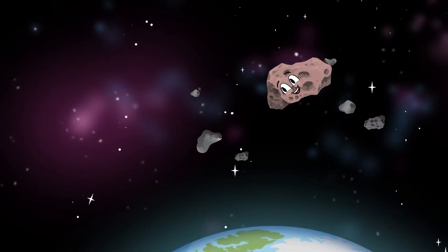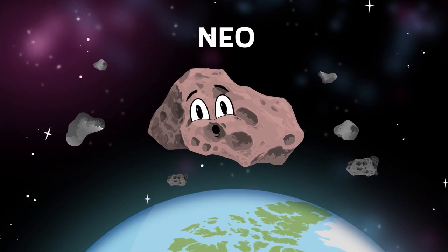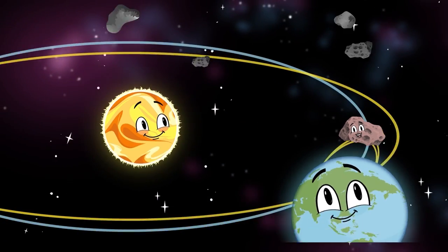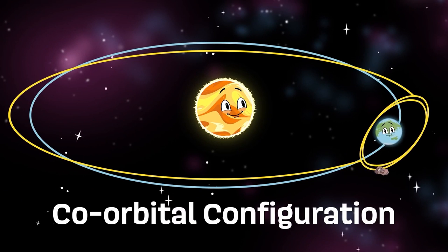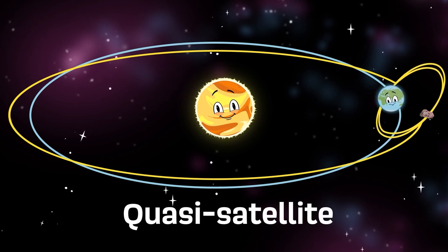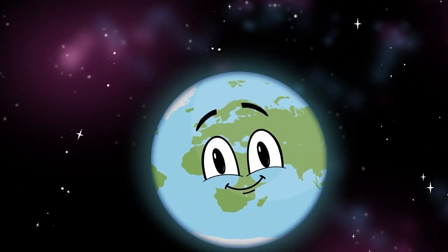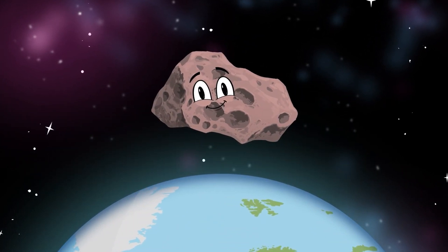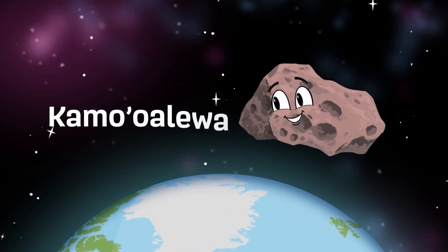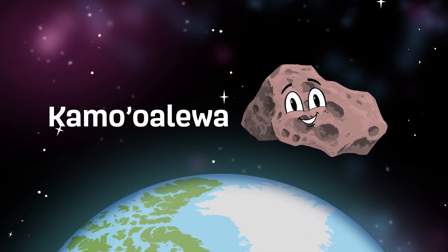I am a near-Earth object, also known as NEO, part of a group of near-Earth asteroids called Apollo. I'm an object in a specific type of co-orbital configuration with a planet. I'm called a quasi-satellite.